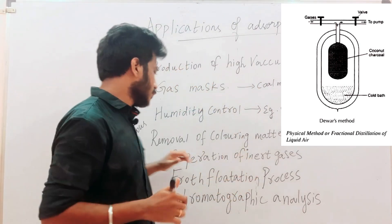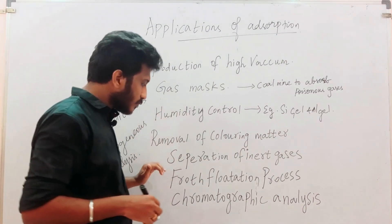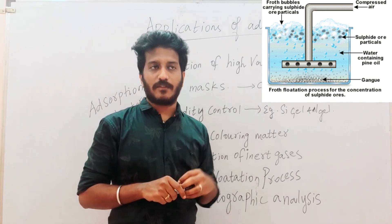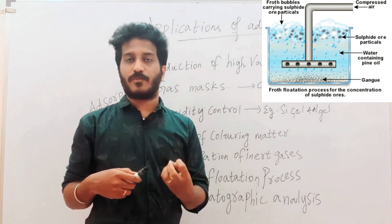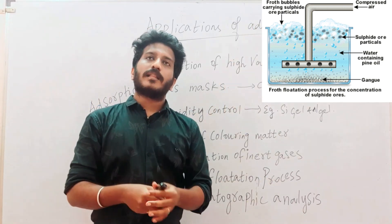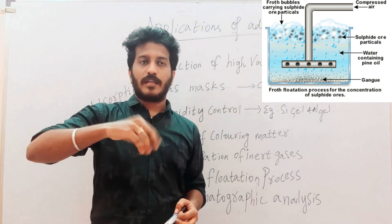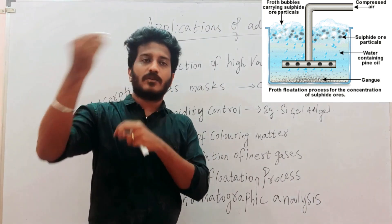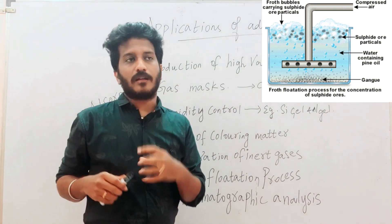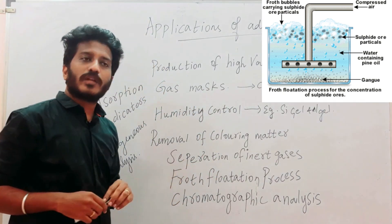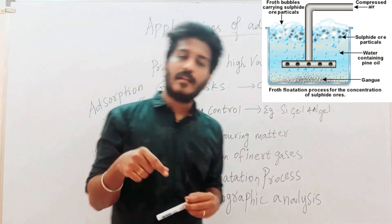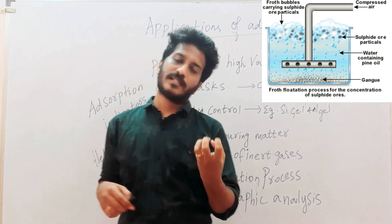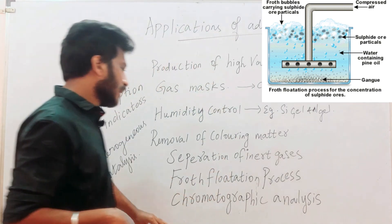Another application is the froth flotation process, used to remove impurities like sulfur from ores. In this process, a tank is used with oil and water — ore is added and air is blown through. A frothy scum forms and collects the impurity. Silica and other impurities are separated this way using the adsorption principle.